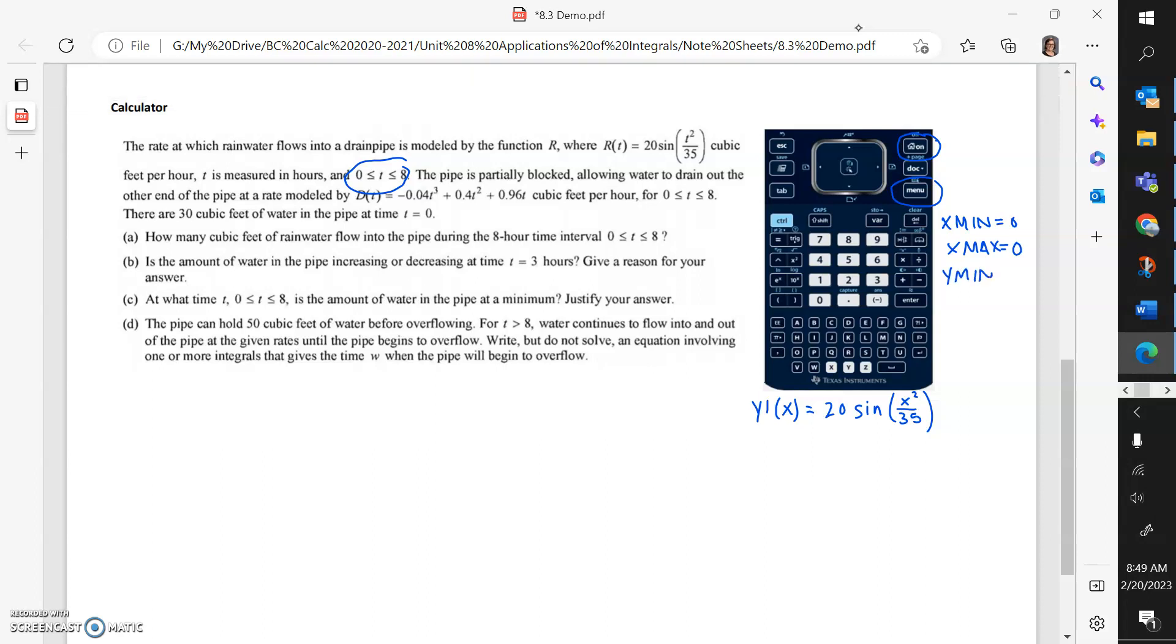And you can guess about your Y min and max. I mean, the rate could be negative, so I would go, your Y min maybe do negative 10 to 50 or something. That's just a guess. And if you're wrong, it's okay. You can change your window later.